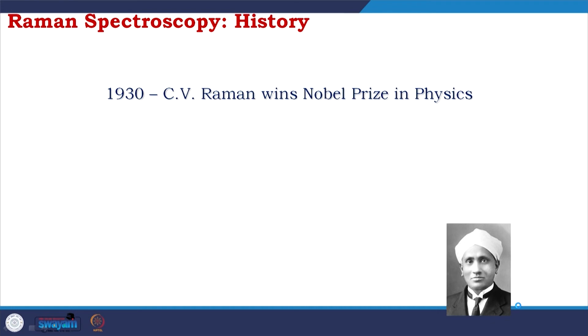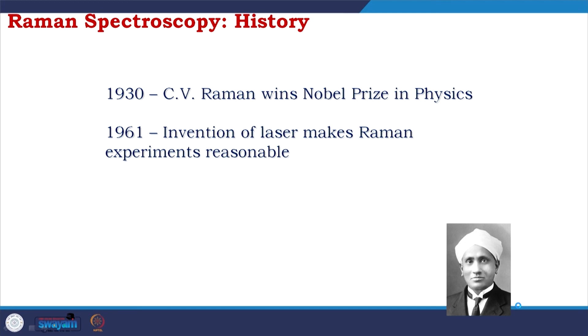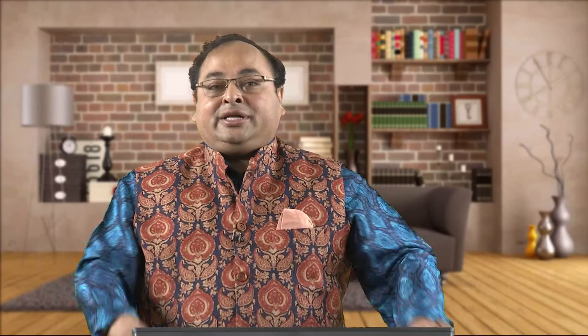In 1930, C.V. Raman won the Nobel Prize in Physics for this contribution. In 1961, the invention of the laser made Raman experiments more practical. In 1977, Surface Enhanced Raman Scattering (SERS) was discovered. By 1997, with increased instrument sensitivity, single-molecule SERS became possible to study.